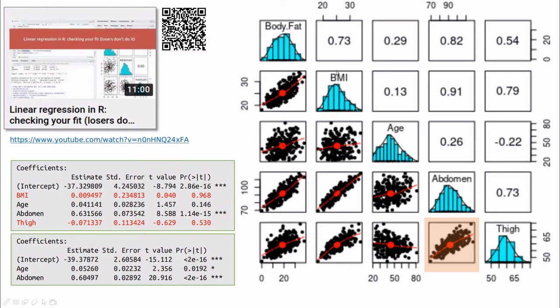For instance, BMI is pretty correlated with body fat, but when we include abdomen and thigh, then BMI becomes relevant. As you can see here, that is not very significant. Also, age becomes relevant when we decide to remove one of these features. So one important question is, how can we deal with this sort of stuff?